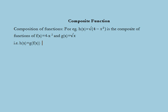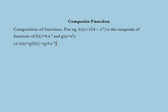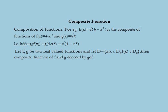Here, h(x) = g(f(x)). Since f(x) = 4 - x², we get g(f(x)) = √(4 - x²). More generally, if f and g are two real-valued functions and D = {x : x ∈ Df and f(x) ∈ Dg}, then the composite function of f and g is denoted gof and defined by gof(x) = g(f(x)) with domain D.